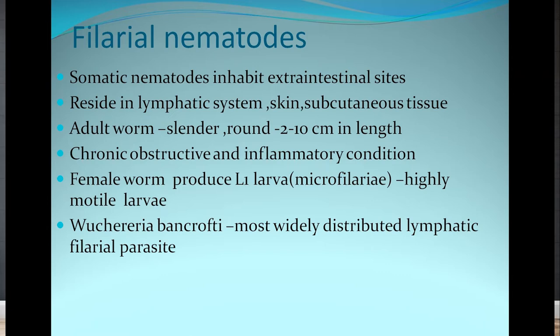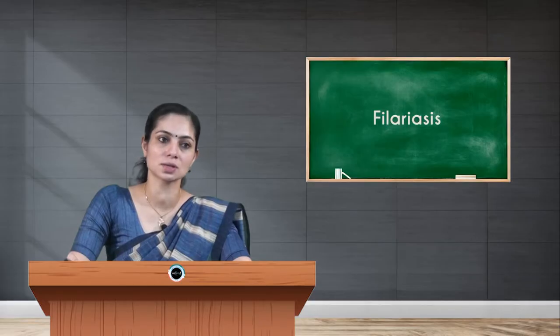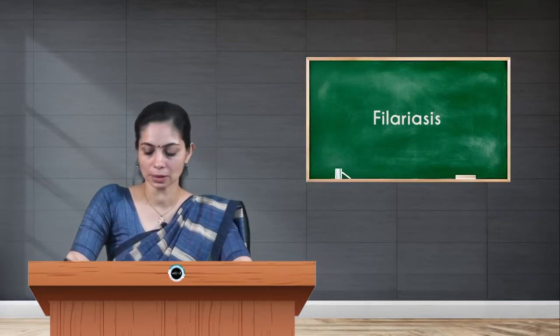It leads to chronic obstructive and inflammatory conditions in the patient. Female worms usually produce larval stages. The first larval stage is microfilaria, which will be actively motile. Today I will be talking about the most widely distributed lymphatic filarial parasite, that is Wuchereria bancrofti.